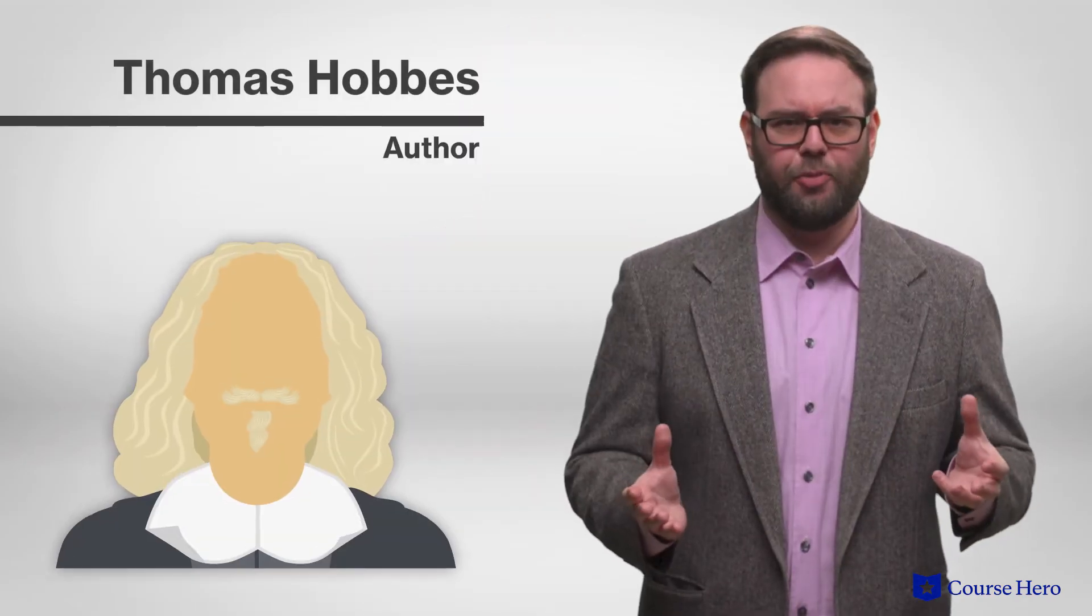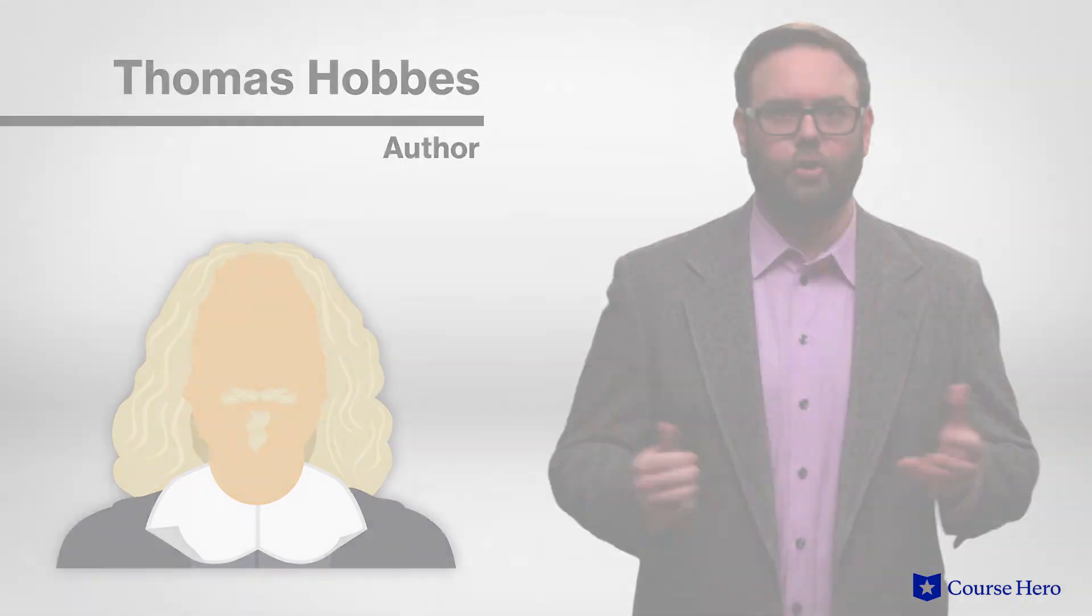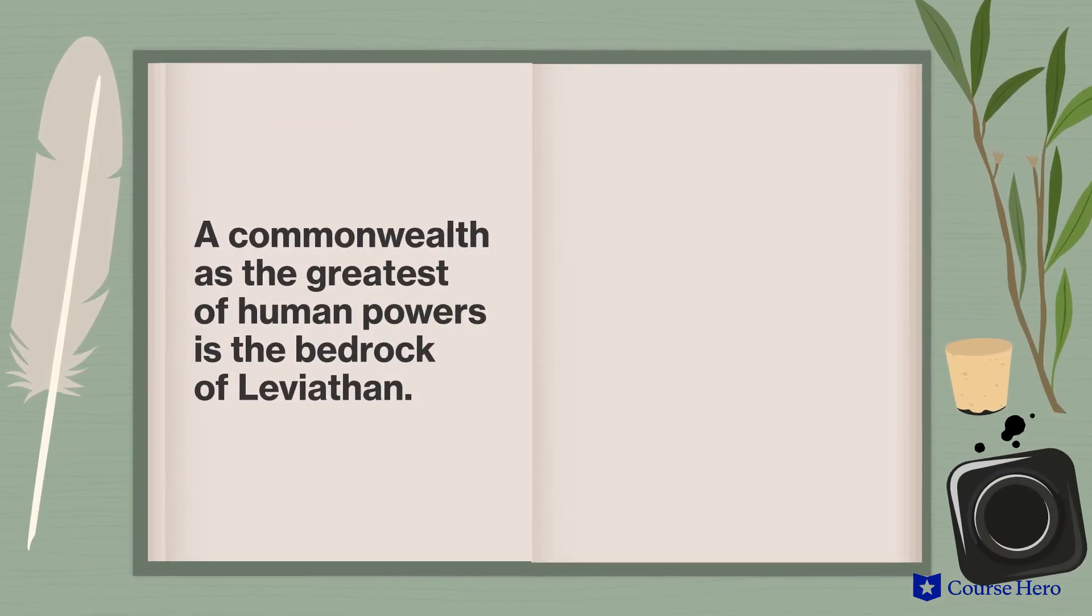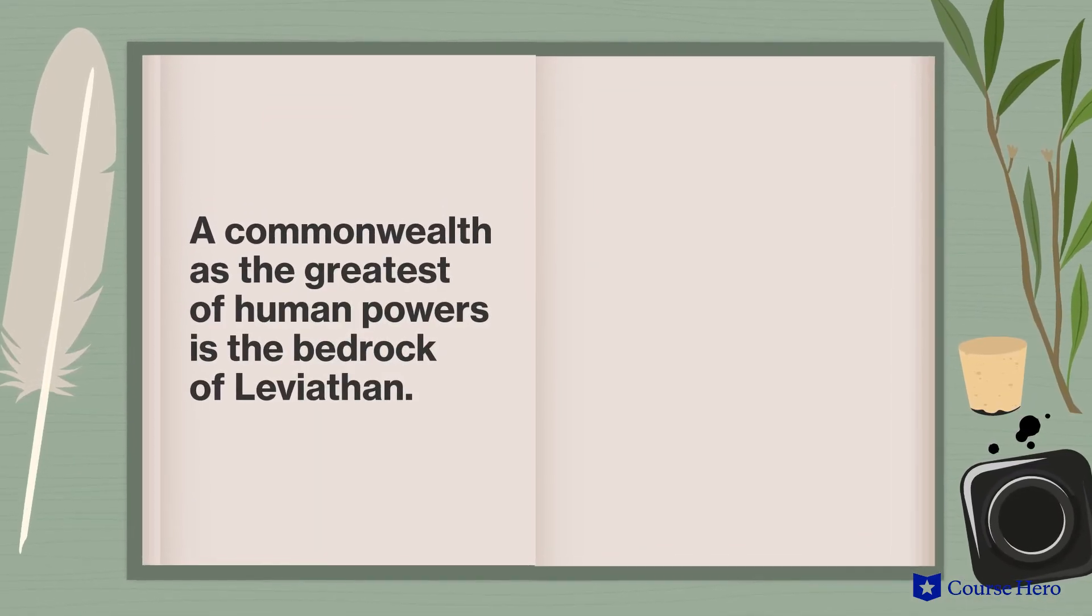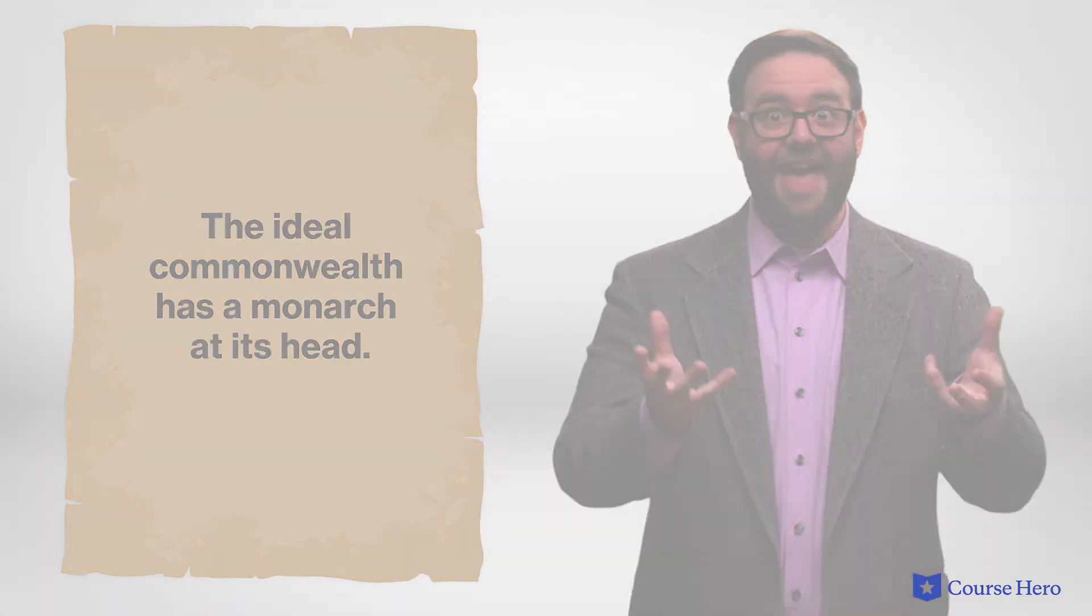Thomas Hobbes is uncomfortable with irrational thought and persistently intense emotions, human qualities he finds threatening to a stable social order. Hobbes's view of a commonwealth as the greatest of human powers is the bedrock of Leviathan. His attention to the concept of honor, titles, and worthiness of power in these chapters lays the groundwork for his insistence in Part 2 that the ideal commonwealth has a monarch at its head.